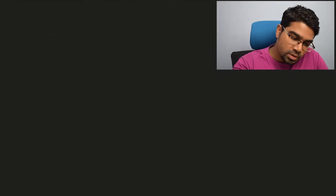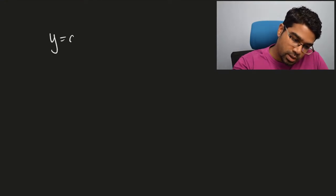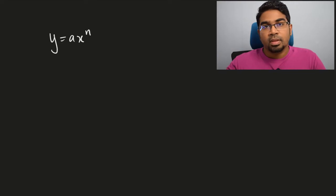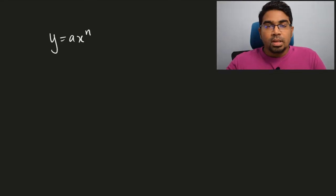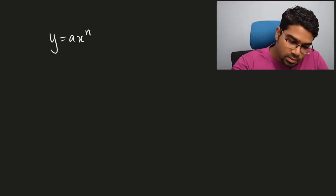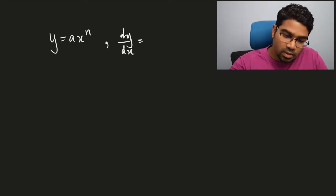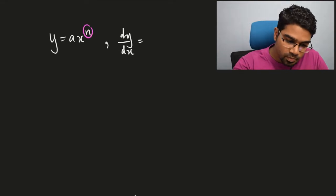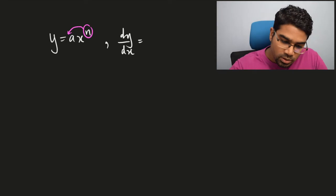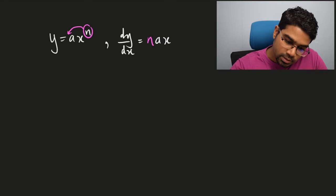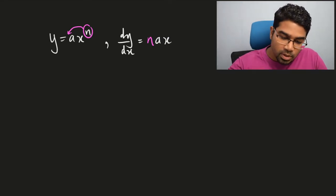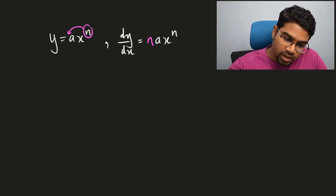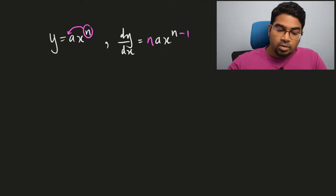Let's say y equals ax to the power of n. When we apply the formula, dy/dx would simply be: you take the power which is n and multiply the whole term by the power. So this would become n multiplied by ax to the power of n minus 1 — we take the power n and subtract 1 from it.